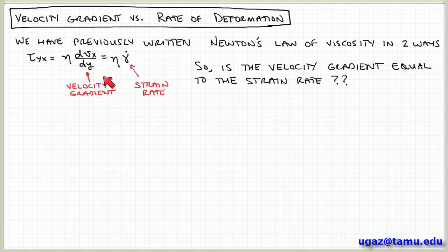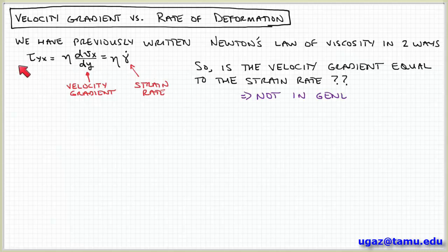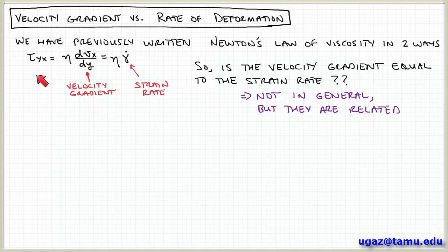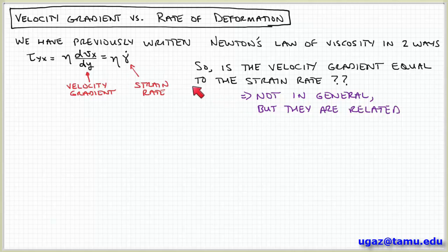And the question came up: are these equal? Is the velocity gradient equal to this strain rate? Well, they're not exactly equal — they're related. For the case of a simple shearing flow, where we have fluid between two plates and one of them is sliding at some velocity v and the other plate is stationary, that's a purely shear-driven flow. And so in that case this equality holds: the velocity gradient is equal to the shear rate or the strain rate.